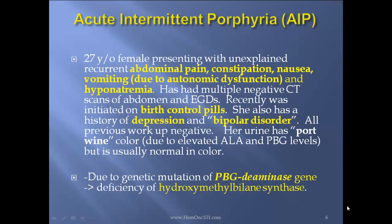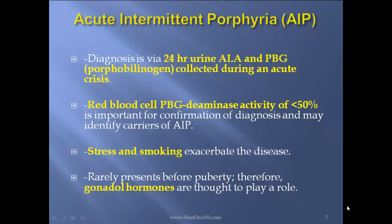Acute intermittent porphyria (AIP) case report: 27-year-old female presenting with unexplained recurrent abdominal pain, constipation, nausea and vomiting due to autonomic dysfunction, and hyponatremia due to SIADH. She has had multiple negative CT scans of the abdomen and EGDs, and was recently initiated on birth control pills. She also has a history of depression and bipolar disorder — these neuropsychiatric issues are frequently misdiagnosed as bipolar disorder. All previous workup was negative. Her urine has a porphyrin color due to elevated ALA and PBG levels, but is usually normal in color. AIP is due to a genetic mutation of the PBG deaminase gene, which causes a deficiency of hydroxymethylbilane synthase. Diagnosis is via 24-hour urine ALA and PBG collected during an acute crisis.